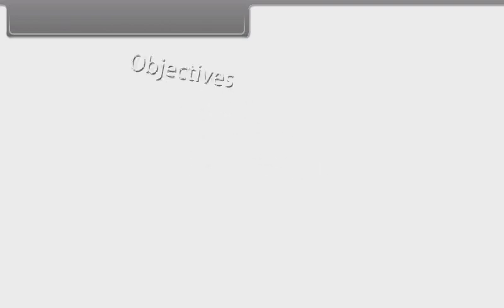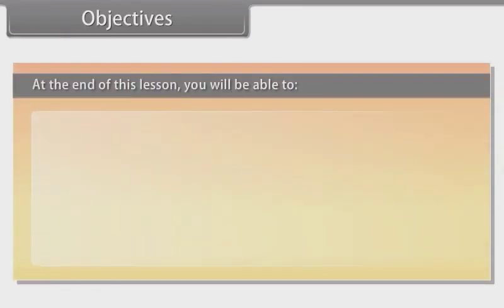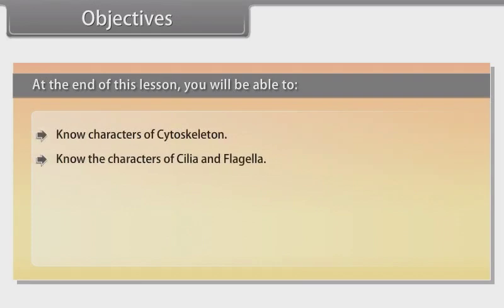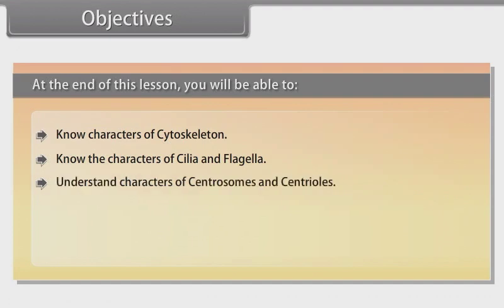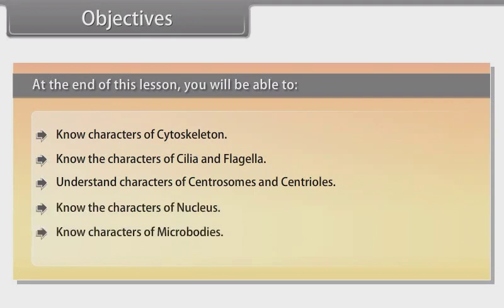Objectives: At the end of this lesson, you will be able to know the characters of cytoskeleton, know the characters of cilia and flagella, understand the characters of centrosomes and centrioles, know the characters of nucleus, and know the characters of microbodies.